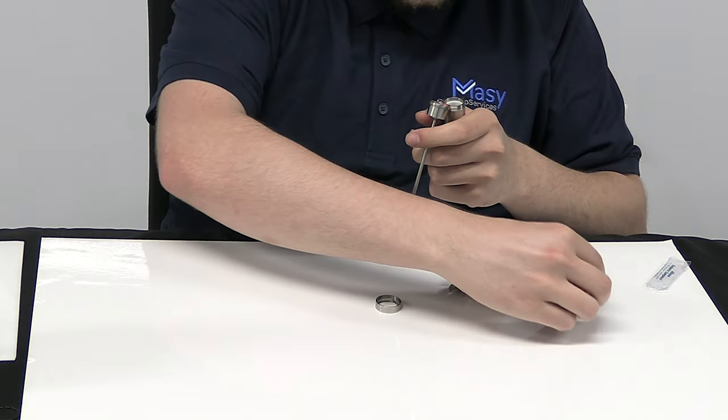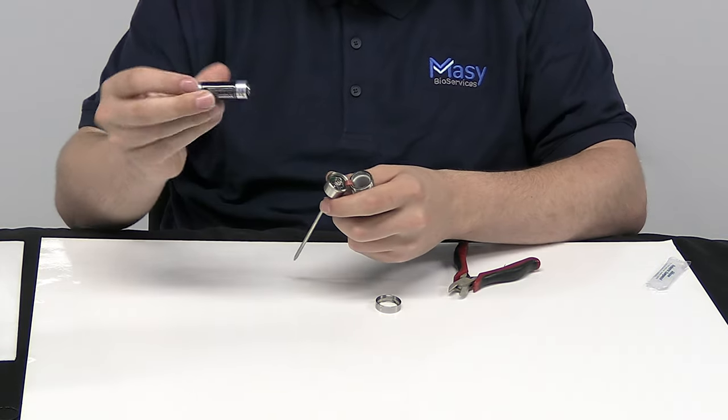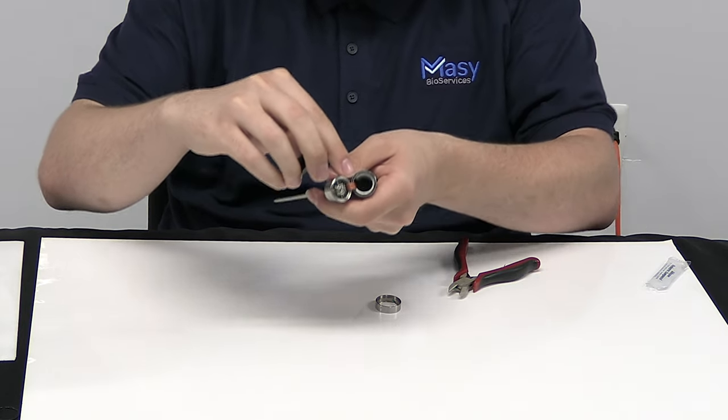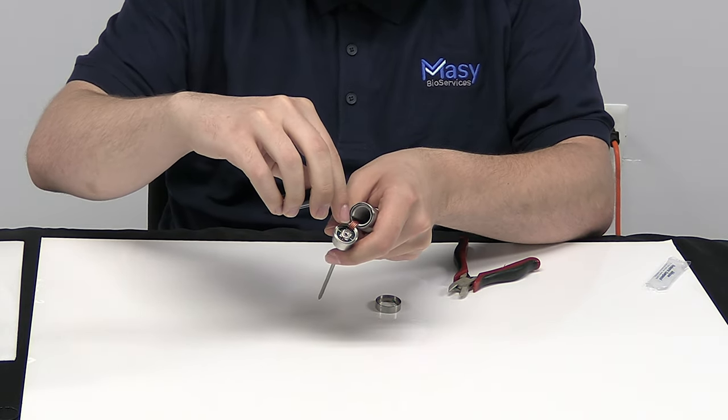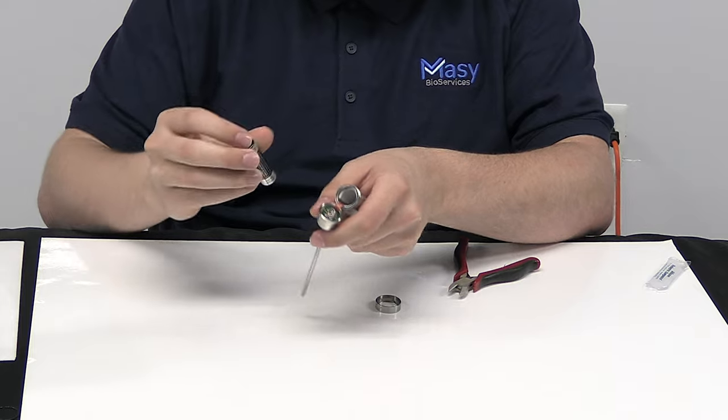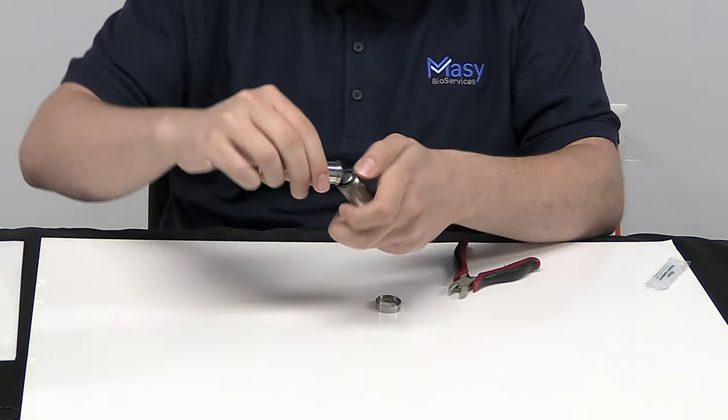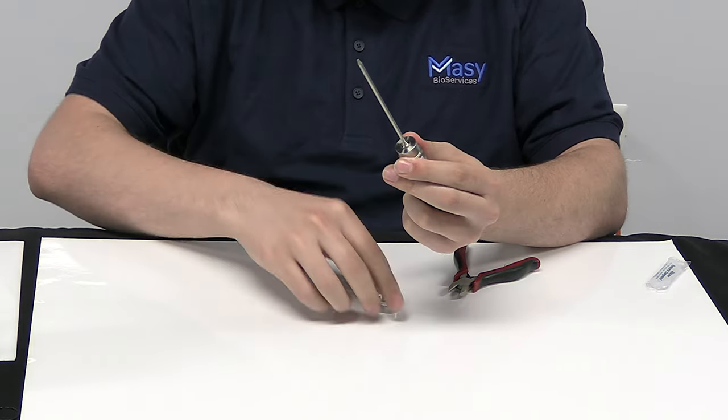Once snugly in place, we take our new battery and ensure that the positive side is facing downwards and the wire on the data trace is in that little groove there. The battery should slide in snug and we close the unit over the top.